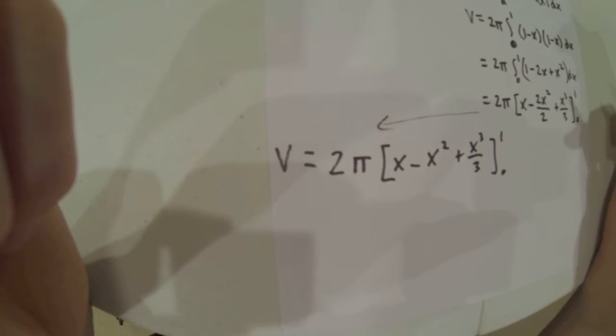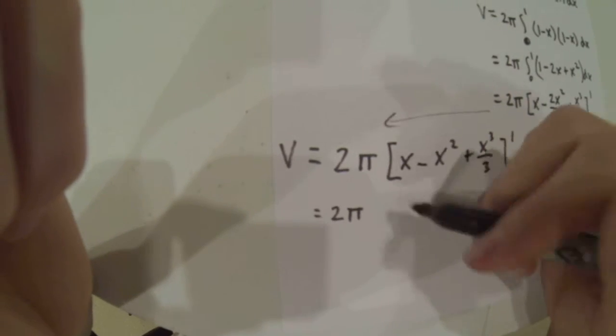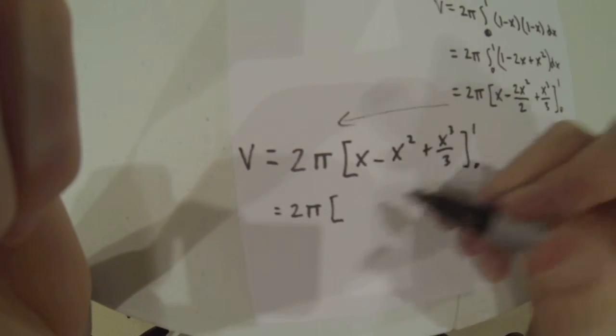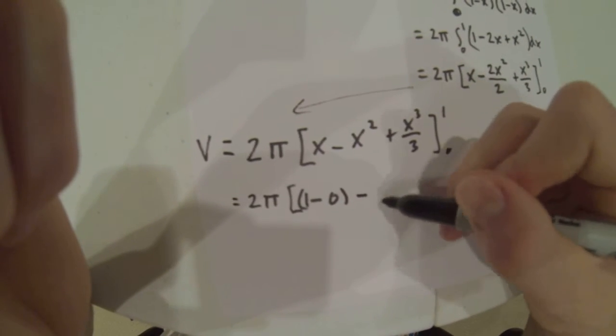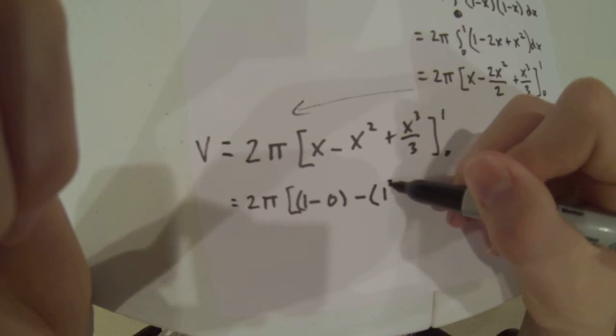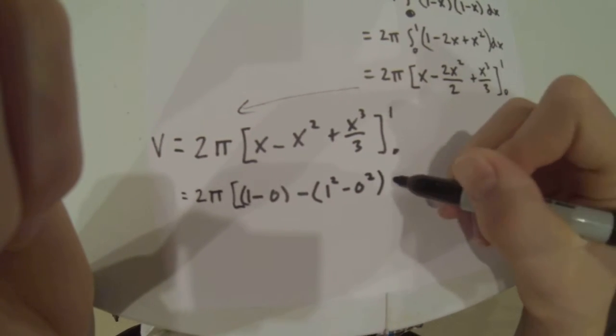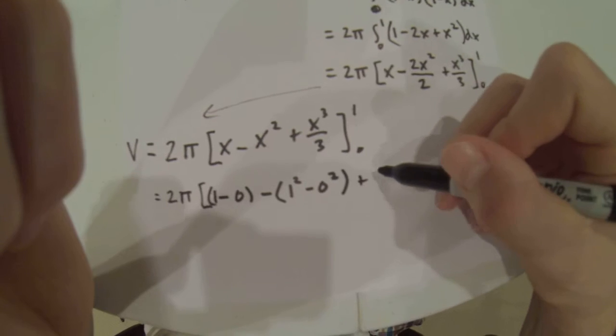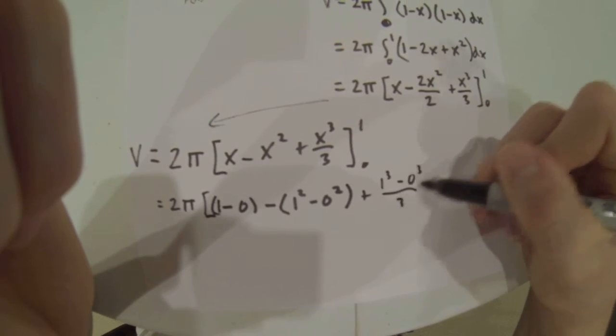From there, we plug in the bounds, which equals 2π times [(1 minus 0) minus (1 squared minus 0 squared) plus (1 cubed minus 0 cubed) over 3].